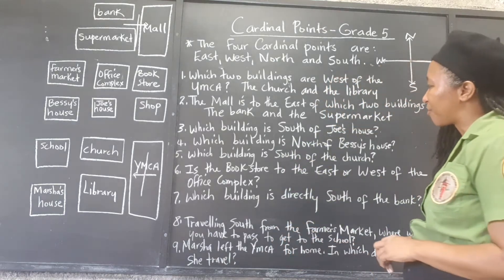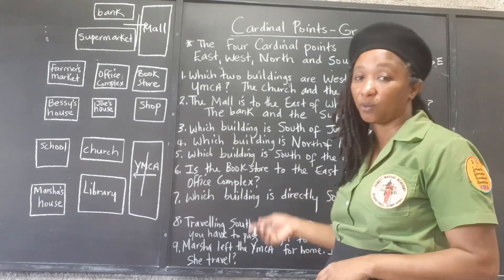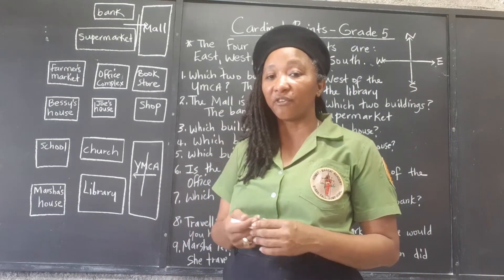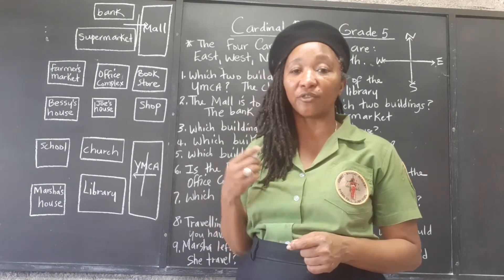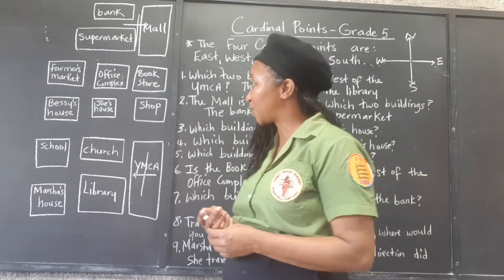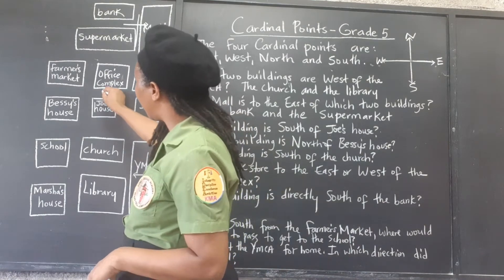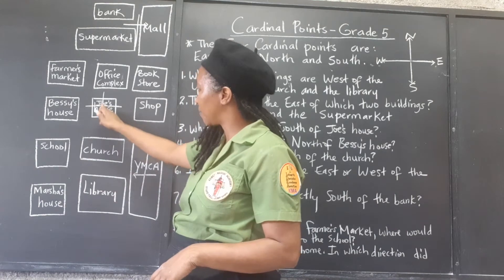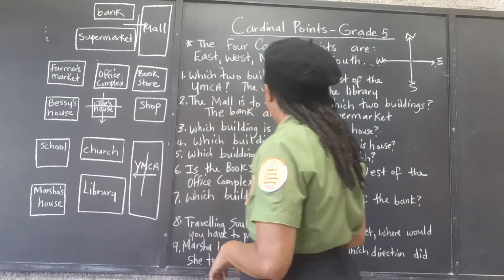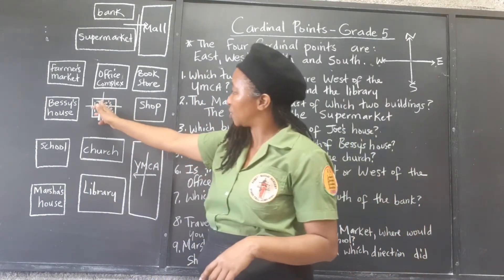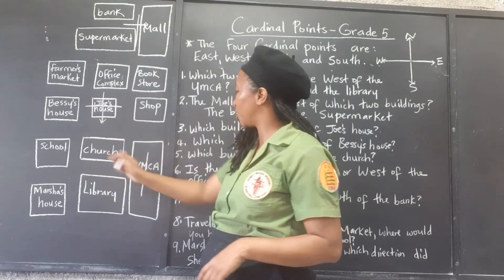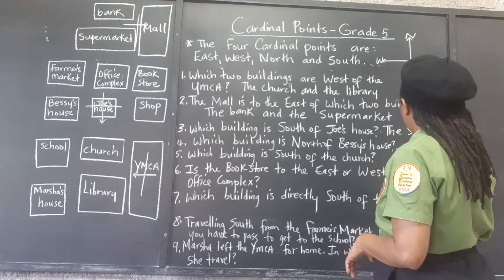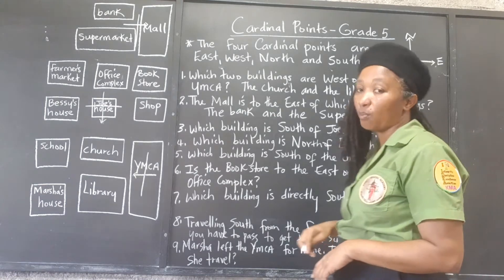Number three: which building is south of Joe's house? Joe's house is our point of reference — that's where we draw our cardinal points. South is that way. So which building is directly south of Joe's house? South of Joe's house is the church. The church is directly south of Joe's house.